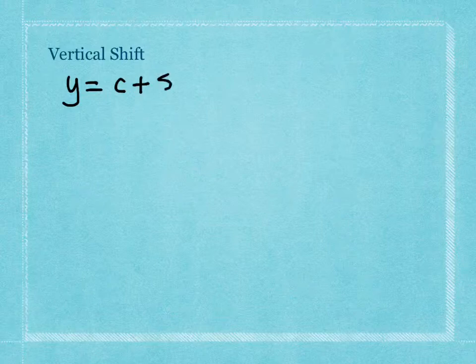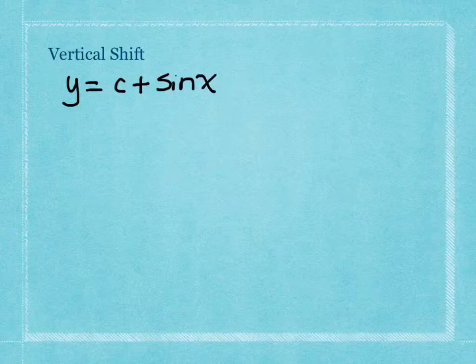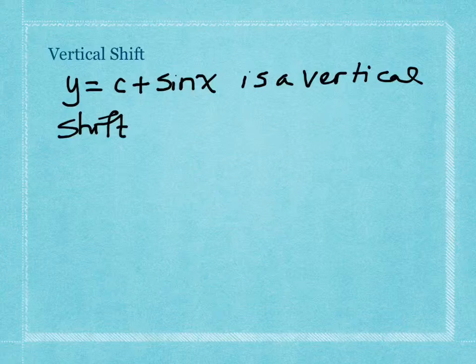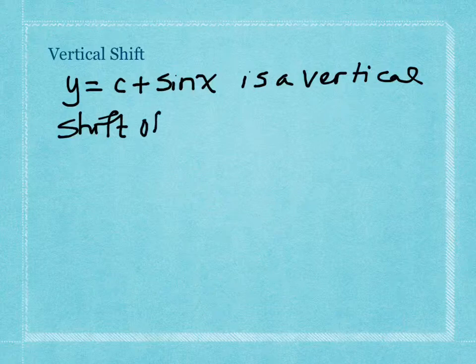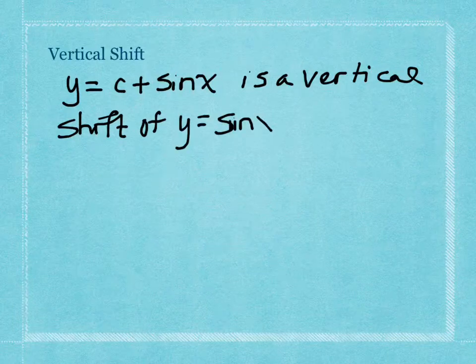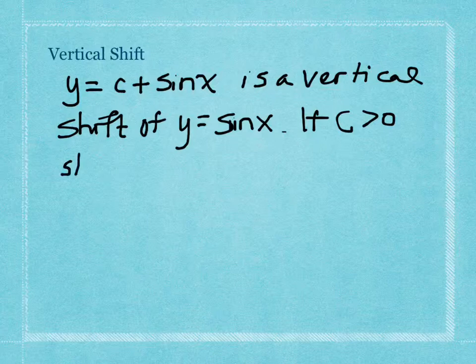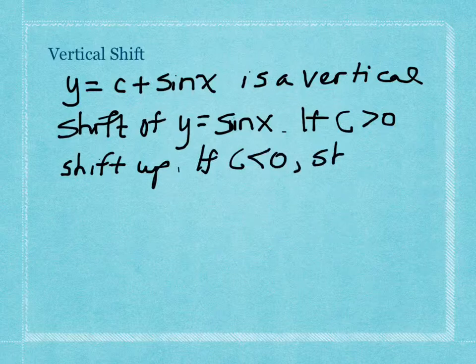There is one other change in this section: a vertical shift. If you have y = c + sin(x), this is a vertical translation — it picks up the graph of y = sin(x) and moves it exactly as it is. If c > 0, this is a shift up. If c < 0, this is a shift down.